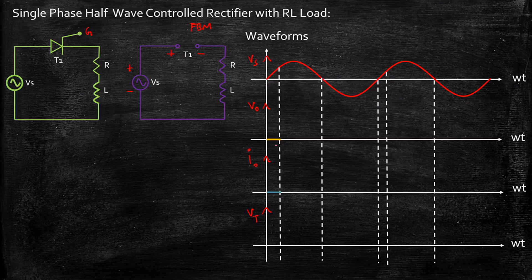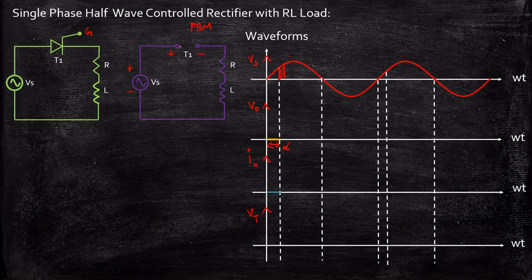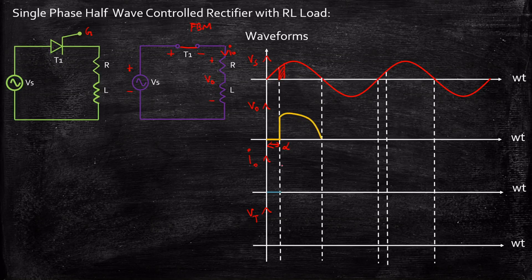Now, at a certain instant, I will be applying the gate signal — basically a small pulse. This instant is called alpha, the firing angle. The instant at which the SCR moves from forward blocking mode to the point where it starts conducting is called the firing angle alpha. Because of the firing angle alpha being applied, thyristor T1 will act as a short circuit, current starts flowing through the load, the inductor starts charging, and there will be some voltage appearing at the load terminal — basically the supply voltage itself, since whatever we are supplying appears at the load terminals.